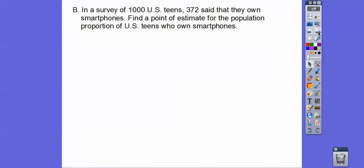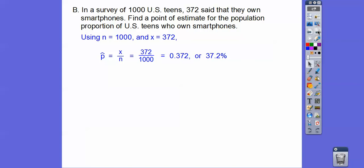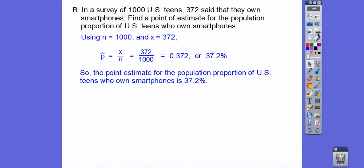For example, in a survey of 1,000 U.S. teens, 372 said that they own smartphones. So find a point estimate for the population proportion of U.S. teens who own smartphones. N is 1,000 and the number of successes is 372, so it's 372 divided by 1,000. Our sample population proportion is called P-hat — P-hat is 0.372, or 37.2%. The point estimate for the population proportion of U.S. teens who own smartphones is 37.2%.